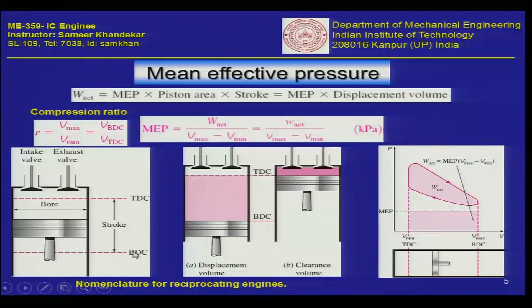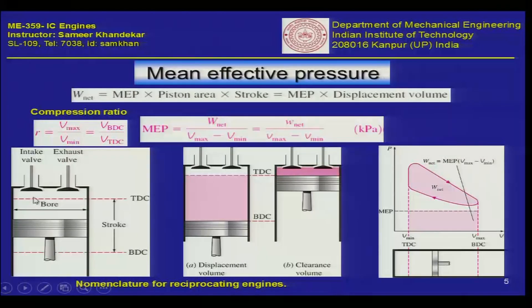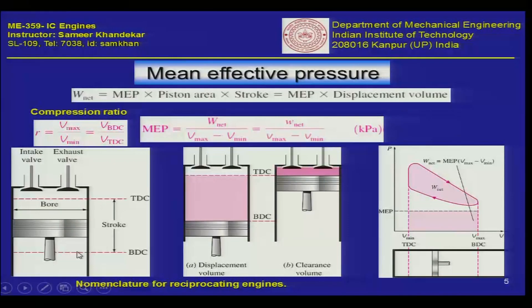This is the top dead center and this is the bottom dead center — the piston goes from the top dead center to the bottom dead center. When the piston reaches the top dead center, a certain amount of volume remains inside, and this is called the clearance volume of the engine. When the piston goes up and down it makes what is called a swept volume — the piston sweeps in the stroke from the BDC to the TDC or vice versa. That is called the swept volume of the engine.